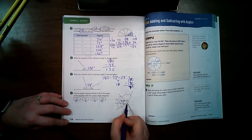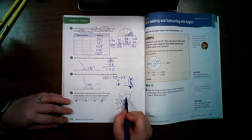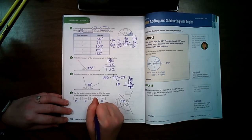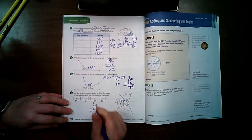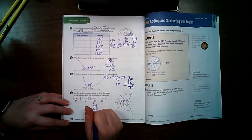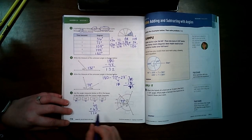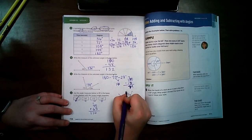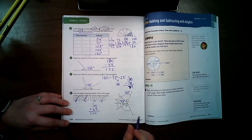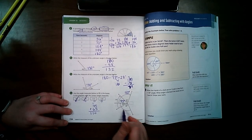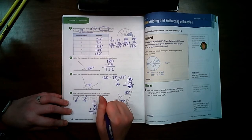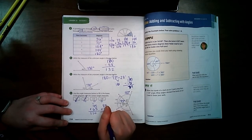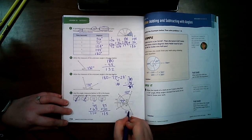I could also use my protractor to measure that. So now this wants to know the total of 45 plus 65, so I can add those together. Ten, eleven, yep, so it's going to be 110 degrees. Now this one wants to know 85 plus 30. It's 115 degrees.